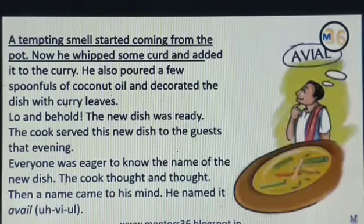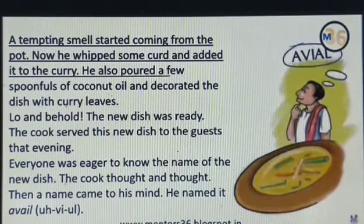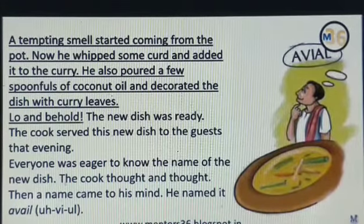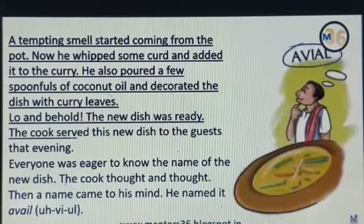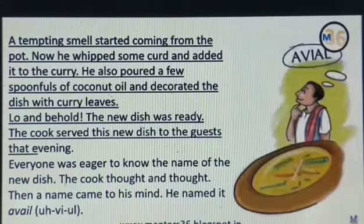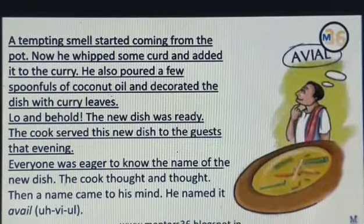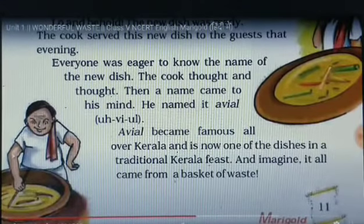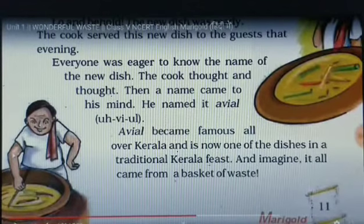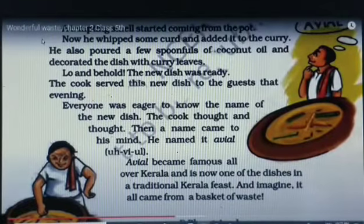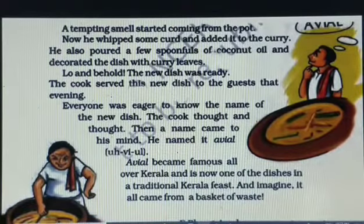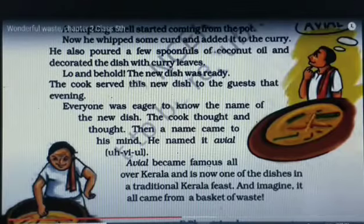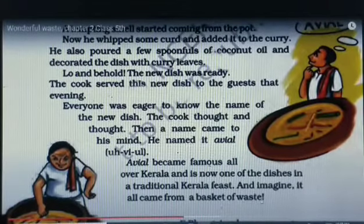A tempting smell started coming from the pot. Now he whipped some curd and added it to the curry. He also poured a few spoonfuls of coconut oil and decorated the dish with curry leaves. Lo and behold, the new dish was ready. The cook served this new dish to the guests that evening. Everyone was eager to know the name of the new dish. The cook thought and thought, then a name came to his mind. He named it Avial. Avial became famous all over Kerala and is now one of the dishes in a traditional Kerala feast. Imagine, it all came from a basket of waste.